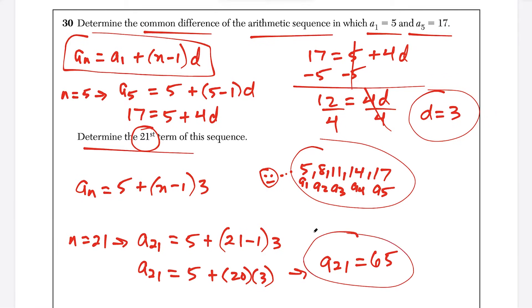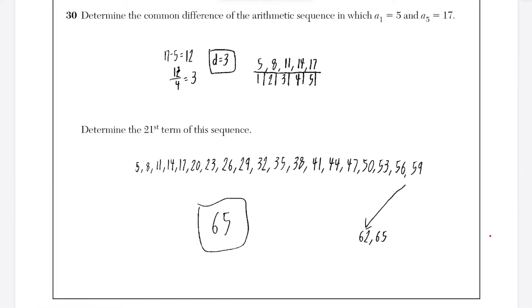Here's our solution to question 30. One model response simply subtracted 17 minus 5 and divided by 4 since a sub 1 and a sub 5 are four terms apart, then verified the common difference and listed out all 21 terms to confirm the 21st term is 65. This approach also earns two points.